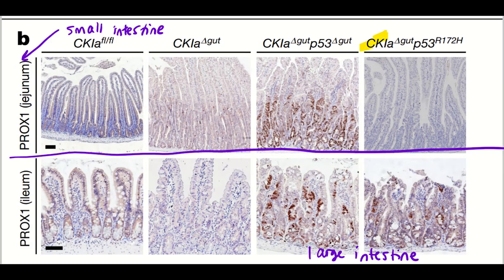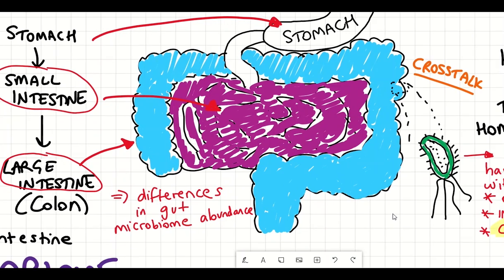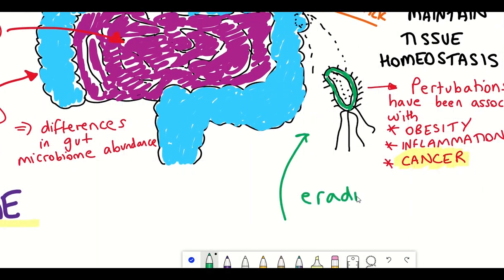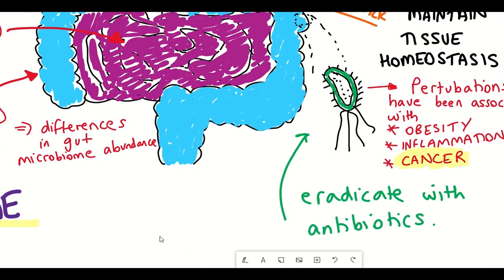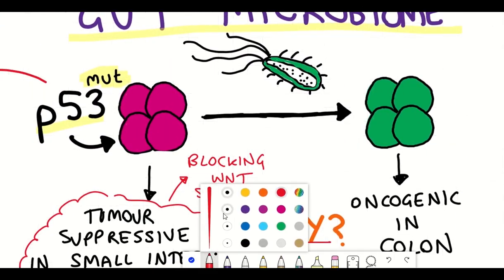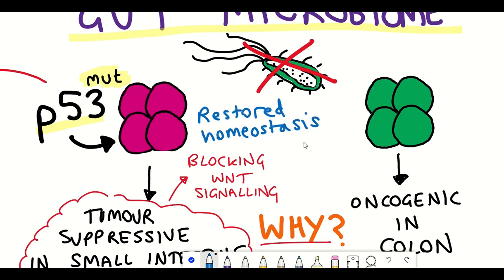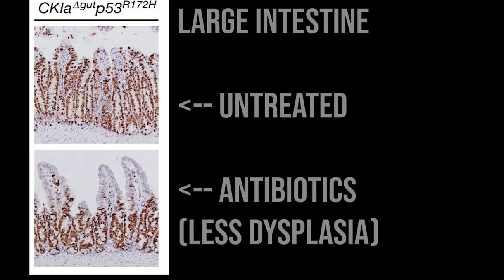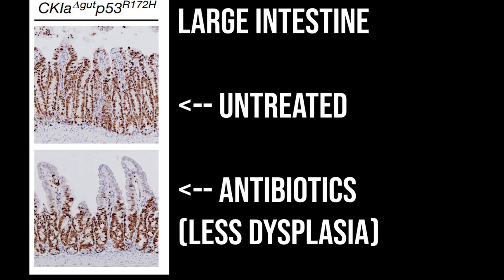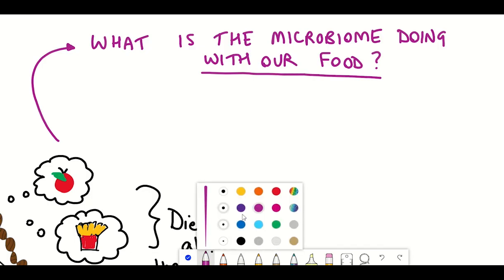So how can you study this? What they did was treat the mice with antibiotics that eradicate the majority of the gut microbiome. By eradicating the gut microbiome, the homeostasis of the colon improved greatly. So by removing the gut microbiome, it seemed to alleviate the oncogenic function of mutant p53 within the colon.